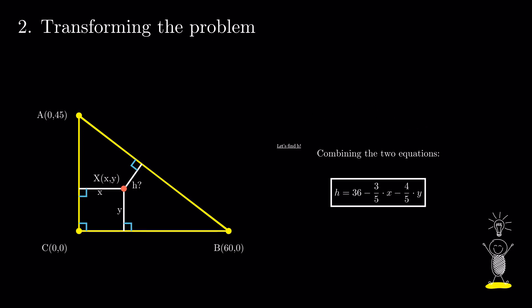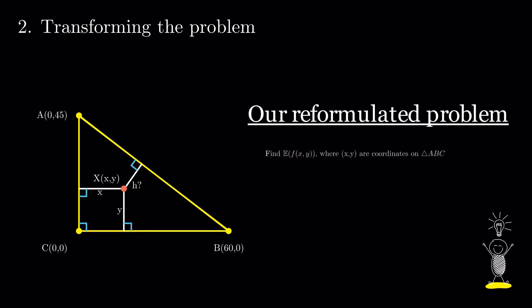Once we combine the two equations, we have a formula for H. Now, we plug this into our initial sum and we have a simplified version of it. We reduced our problem.